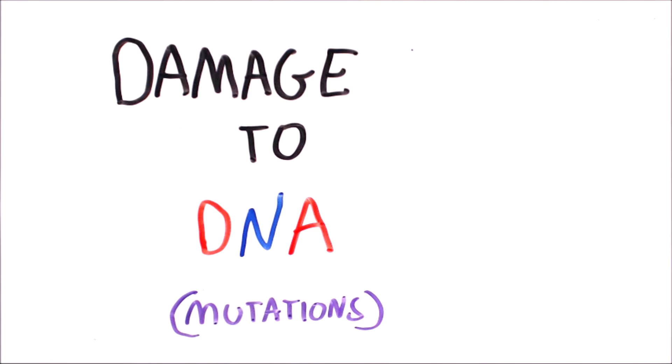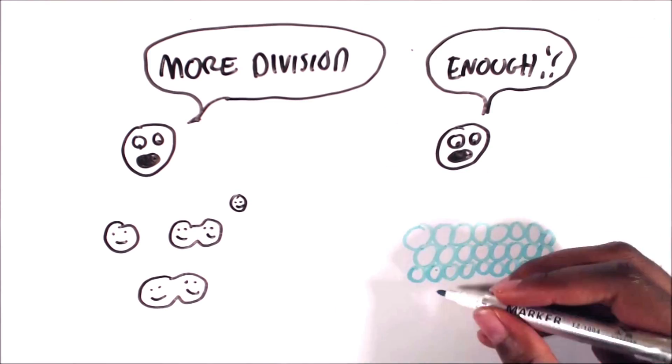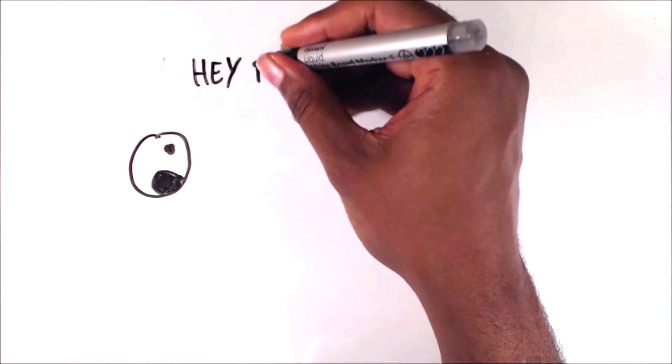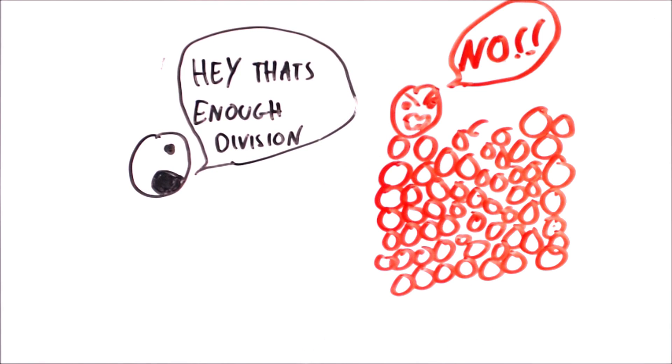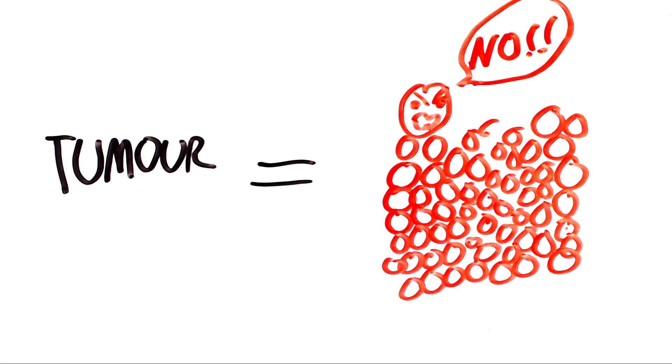Cells normally react to signals which tell them if they need to divide or if they need to stop. Cancer cells however do not listen to these signals, so they keep dividing no matter how crowded it gets. They are essentially immortal and as long as they have enough nutrients they will keep dividing, leading to tumours.